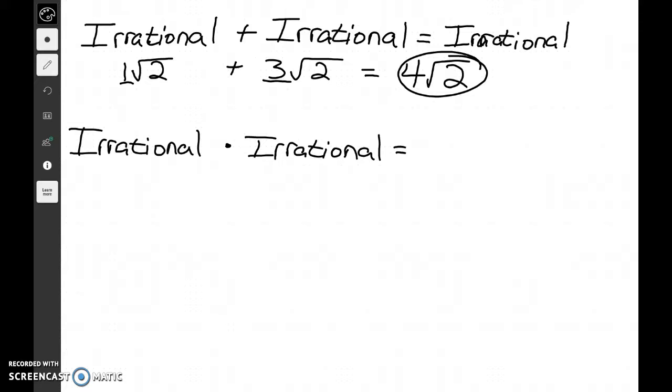Now multiplication's a little bit of a different story when we multiply irrational numbers. Let's take, for instance, the square root of 2 times the square root of 2. We would all agree that the square root of 2 times the square root of 2 is both irrationals, correct?